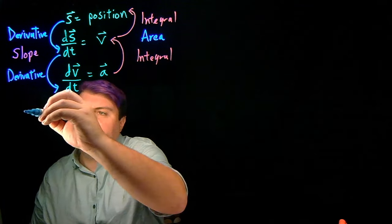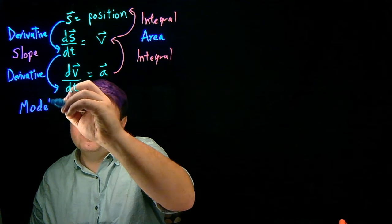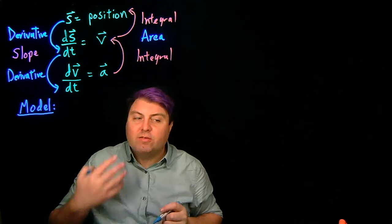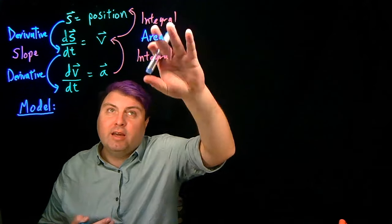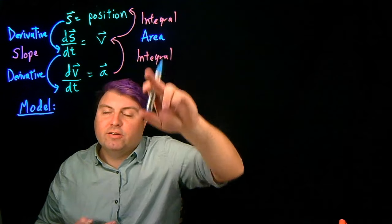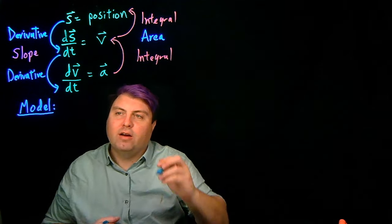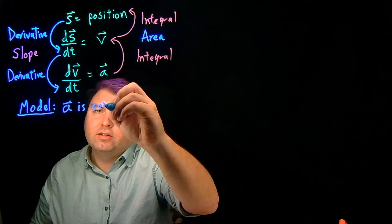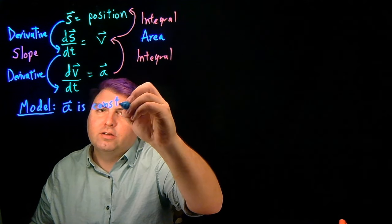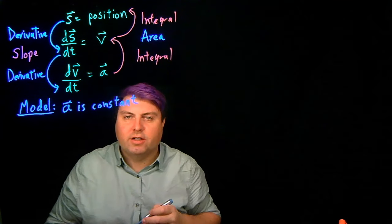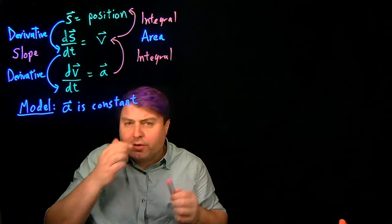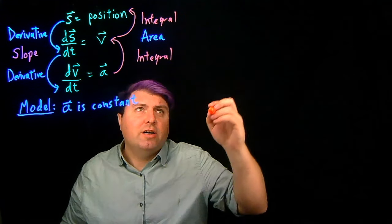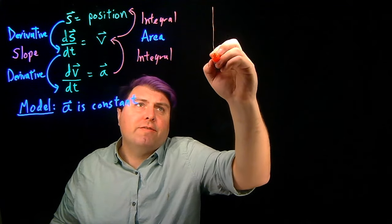We're going to start with a model. A model is a simplification to make our lives easier. In order to make these integrals into areas, we want to make a model that our acceleration is constant.